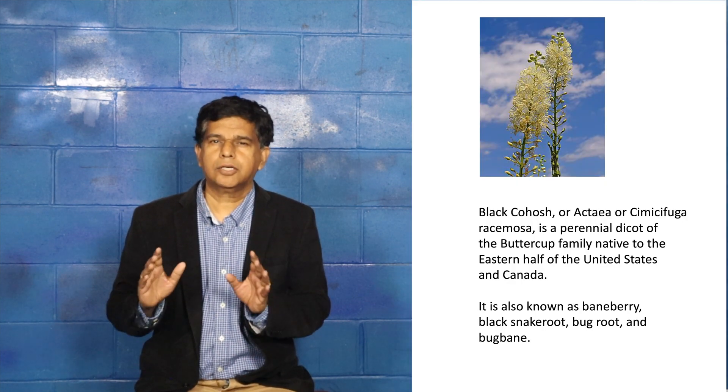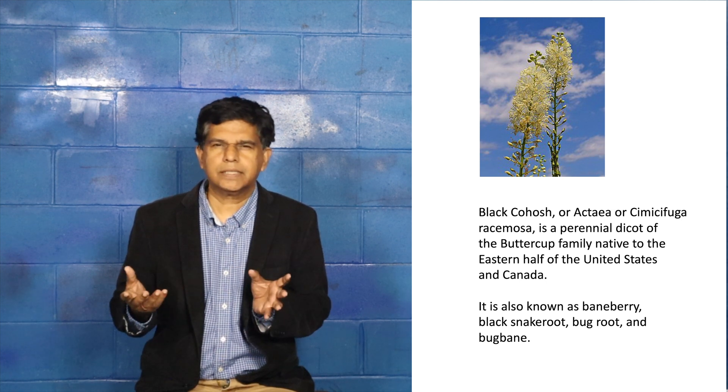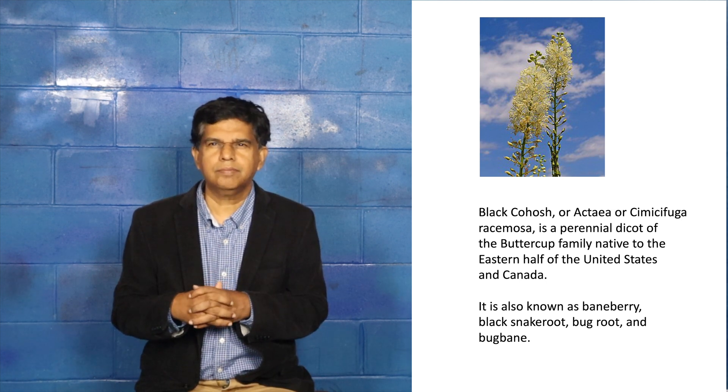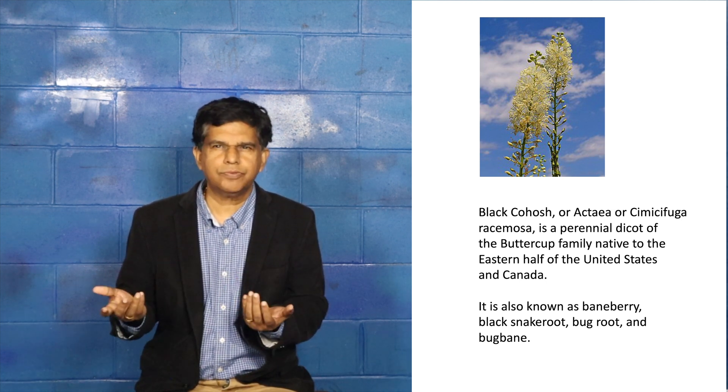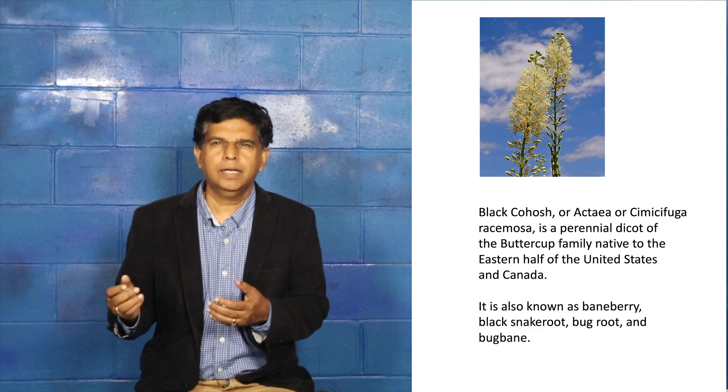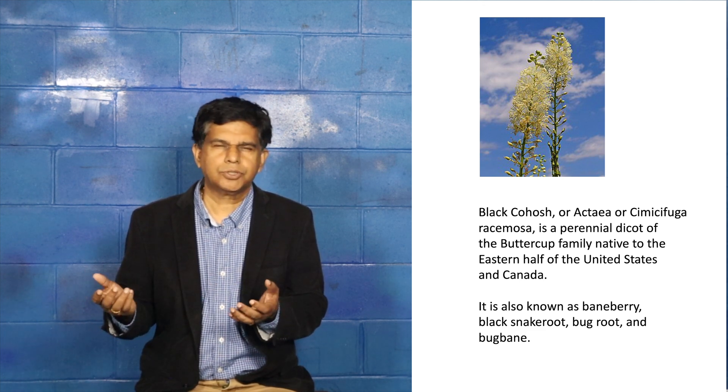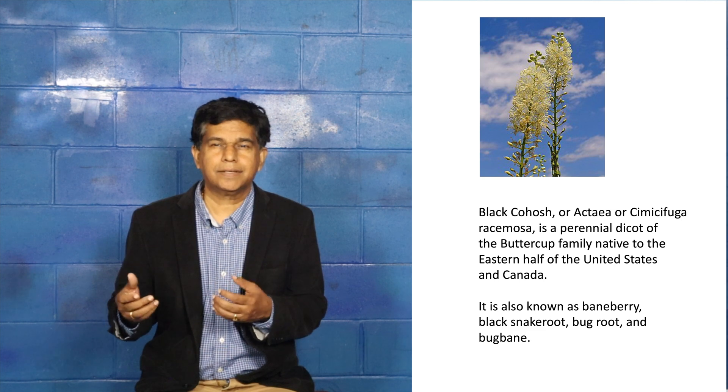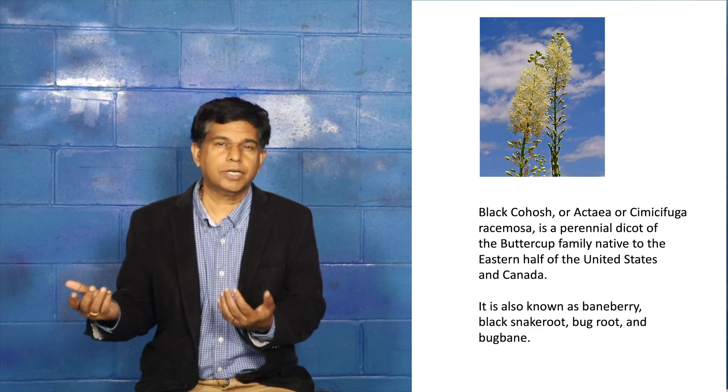So our topic today is black cohosh. The scientific name is Actaea cimicifuga racemosa, or sometimes it can also be called Actaea racemosa or cimicifuga racemosa. It's found in the United States and Canada, and Native Americans used to use it for a lot of gynecological conditions.